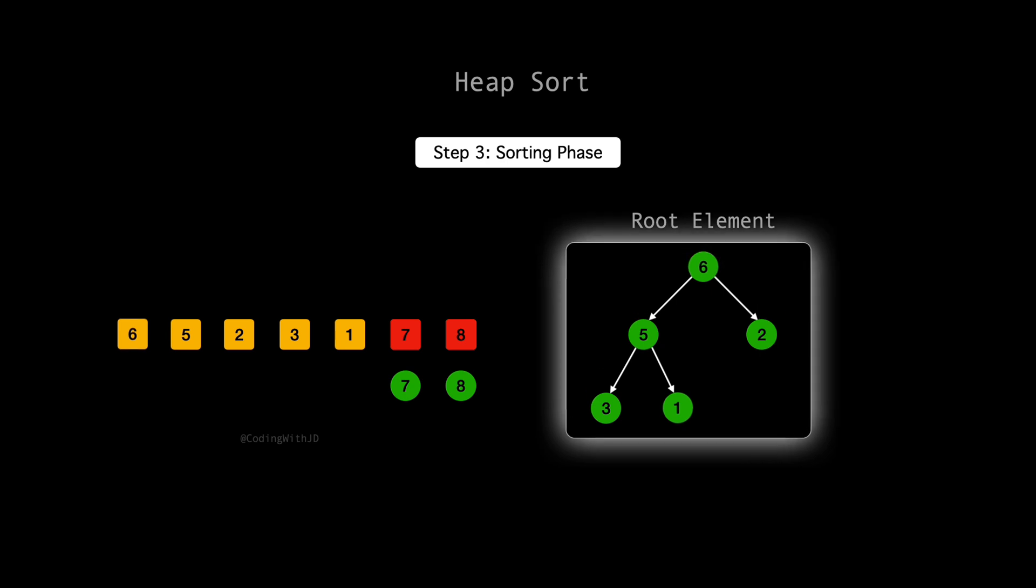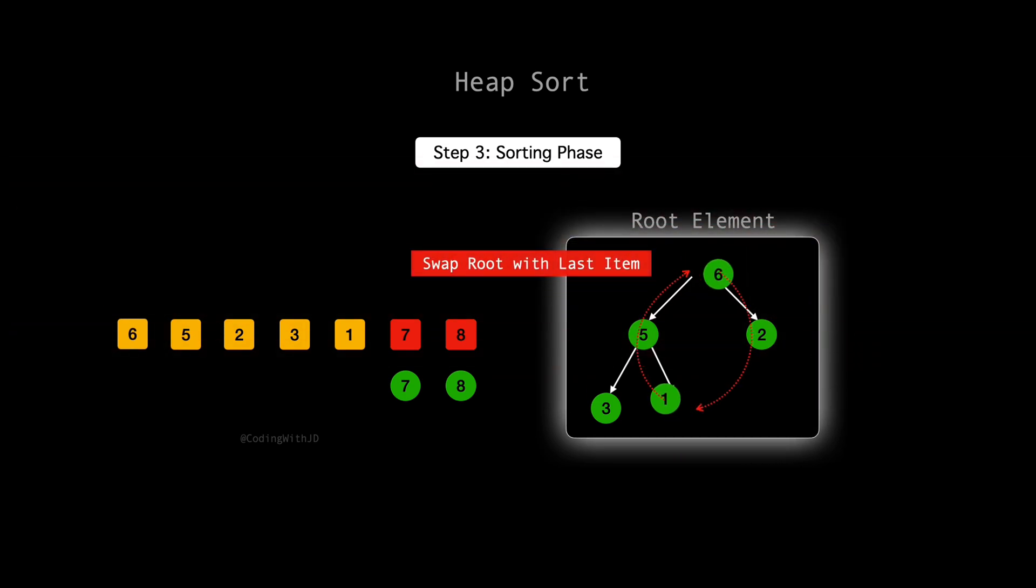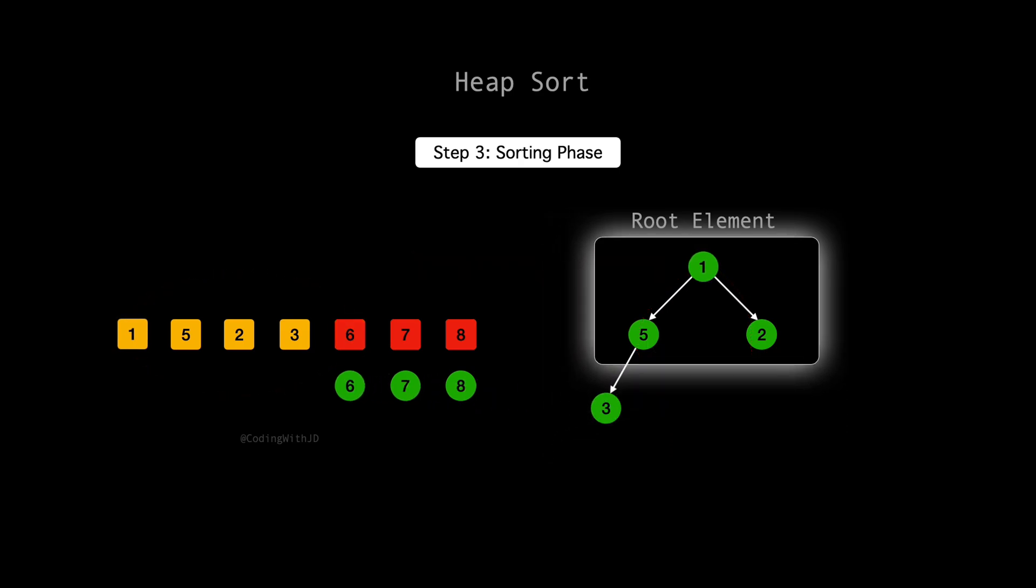We'll proceed by swapping the root with the last element in the heap, then re-heapifying to maintain the heap structure. With 1 at the root, it's lighter than both of its children, 5 and 2. To maintain the max heap property, we need to swap 1 with the largest of its children. Between 5 and 2, 5 is clearly the larger element. We'll swap 1 with 5 to move the larger element to the root and restore the heap structure.